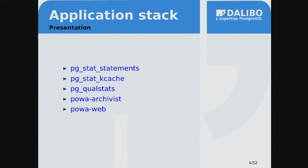To provide metrics and suggestions on how to optimize your database, you have to collect those metrics. POWA is based on an application stack composed of pg_stat_statements, pg_stat_kcache, pg_qualstats, POWA Archivist, and POWA Web. The one you're probably all familiar with is pg_stat_statements. The others are mostly Postgres extensions, plus POWA Web, which is the web interface that displays all those results and makes index suggestions to improve your database.